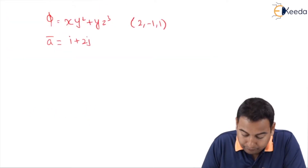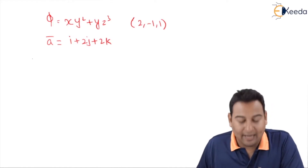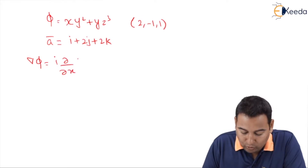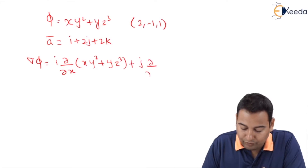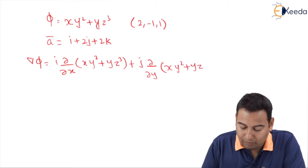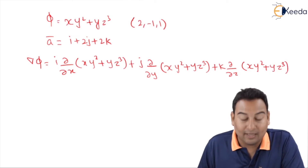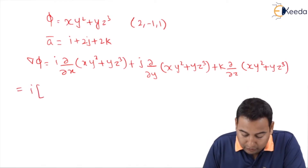Let's find del-phi. Del-phi equals i·(∂/∂x)(xy² + yz³) + j·(∂/∂y)(xy² + yz³) + k·(∂/∂z)(xy² + yz³). Let's simplify each partial derivative.